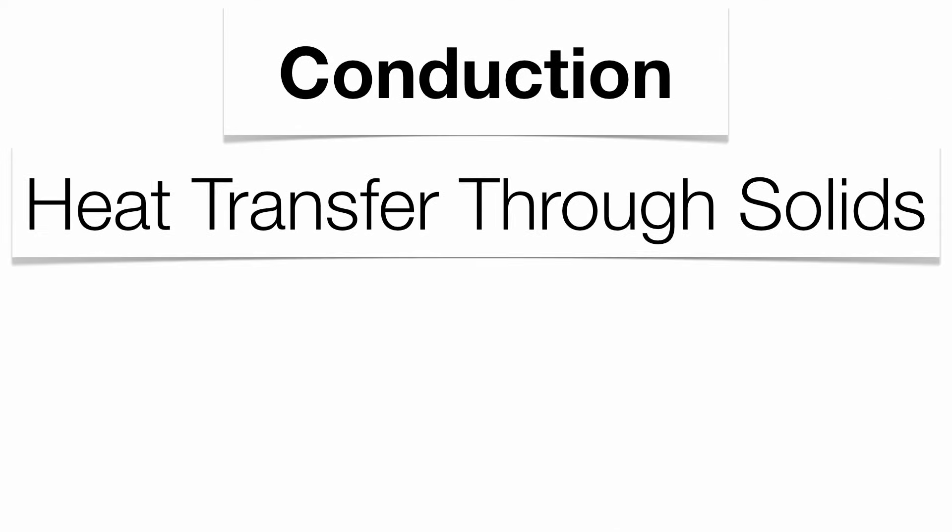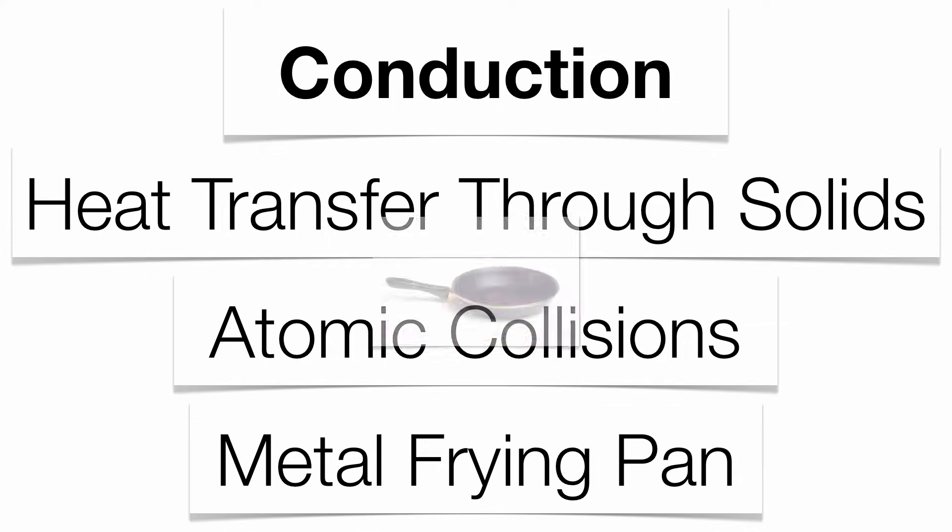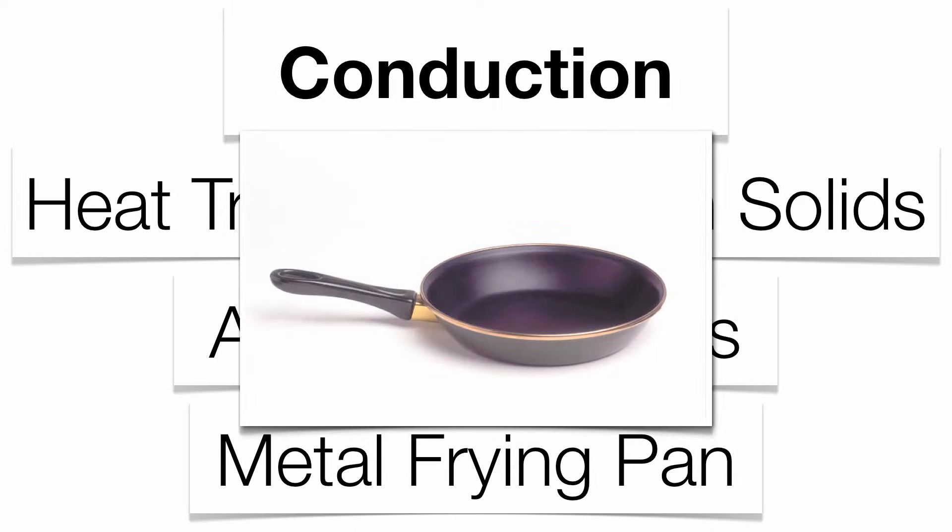Conduction is heat transfer through a solid. When a solid gets heated up, the molecules that make it up crash into each other in atomic collisions. Energy is then passed from one atom to the next, and eventually the entire solid heats up. A good example is a metal frying pan. Metal frying pans are good conductors of energy and heat up quickly because they have low specific heat. Notice that metal frying pans usually have a plastic handle, which is not a good conductor, so you can pick it up without burning your hands.